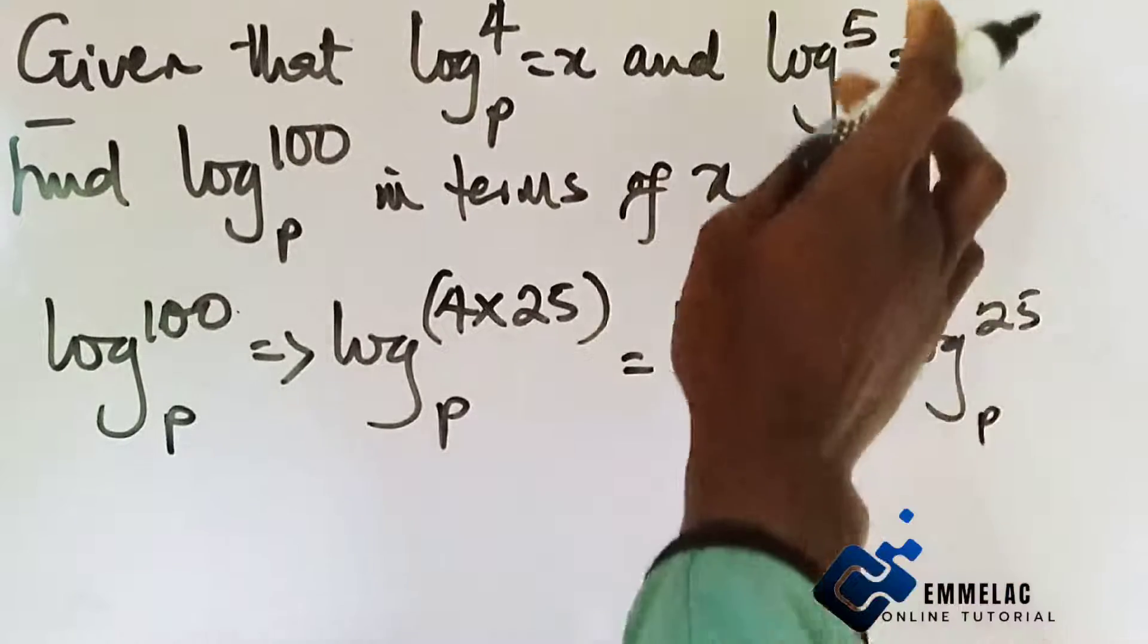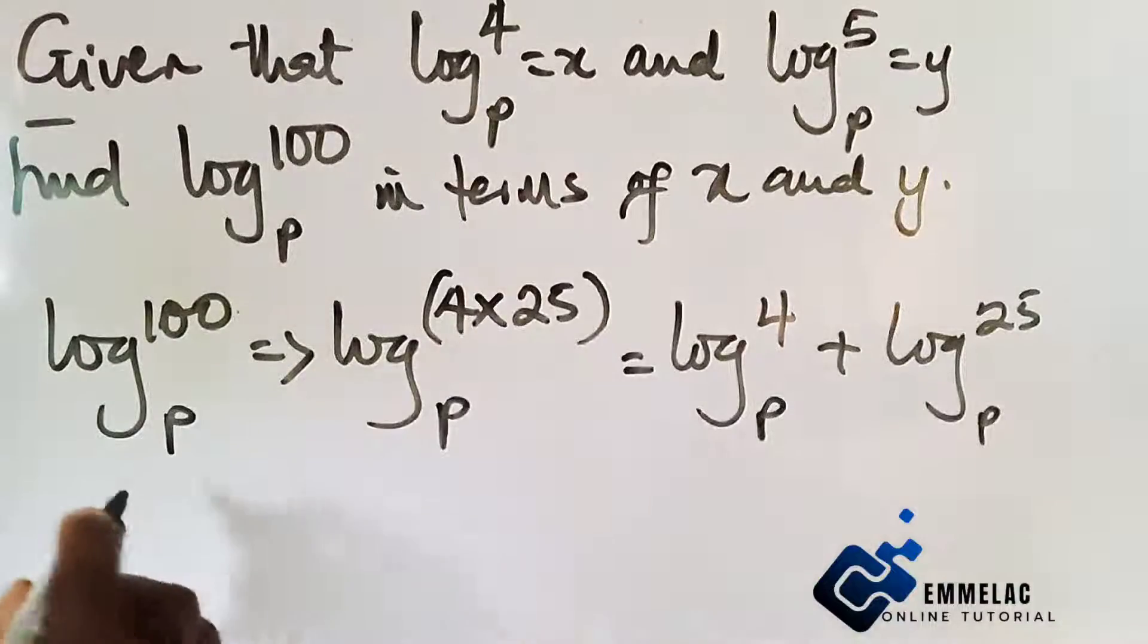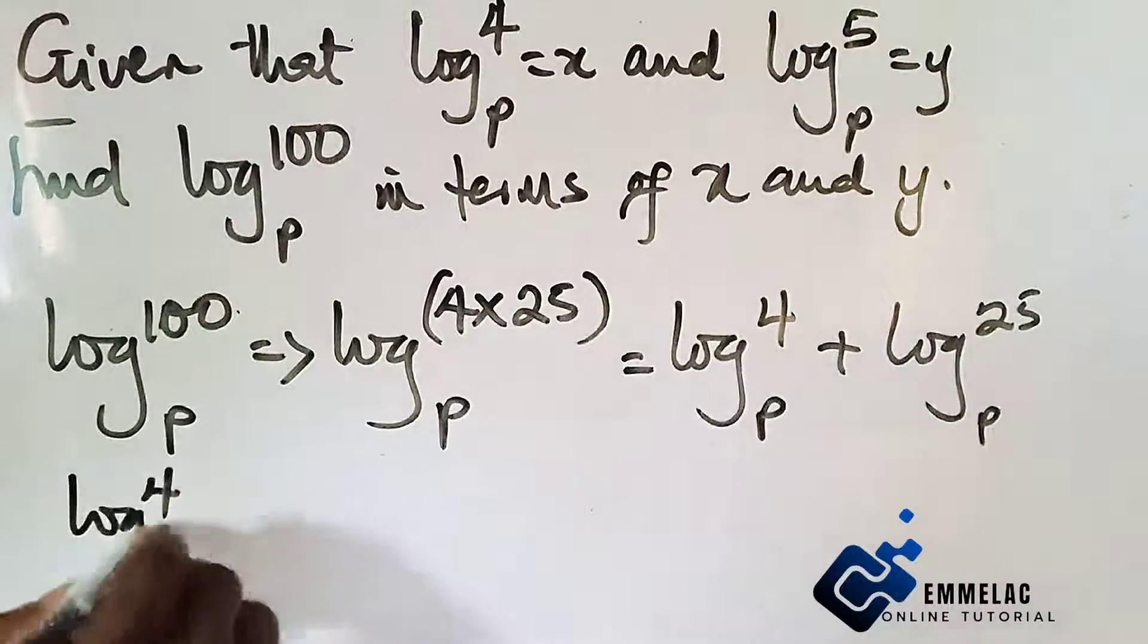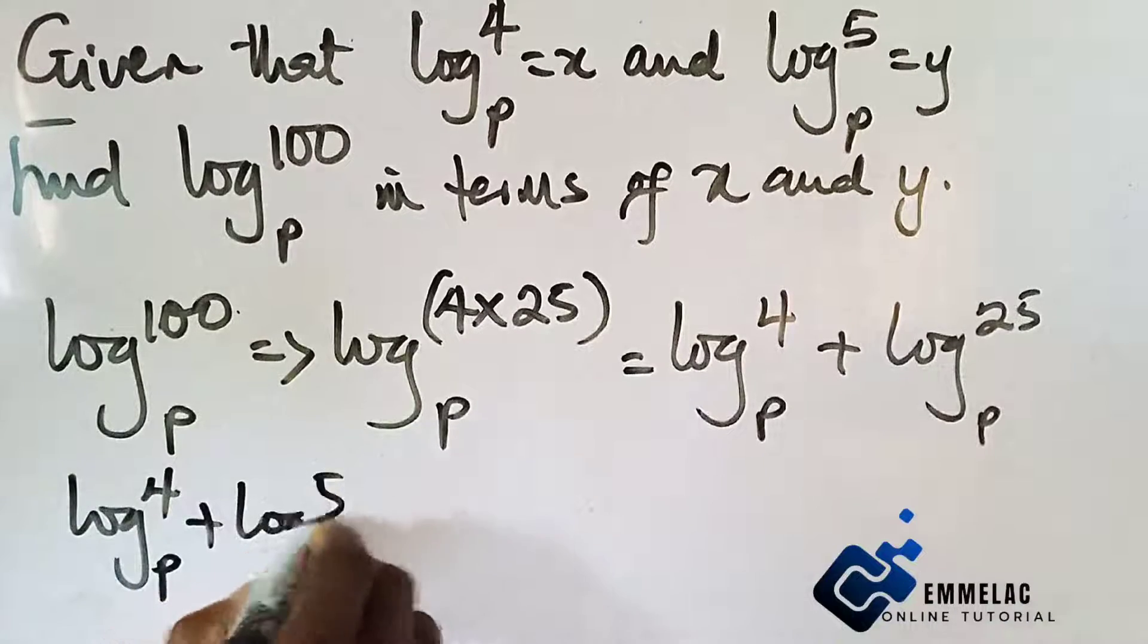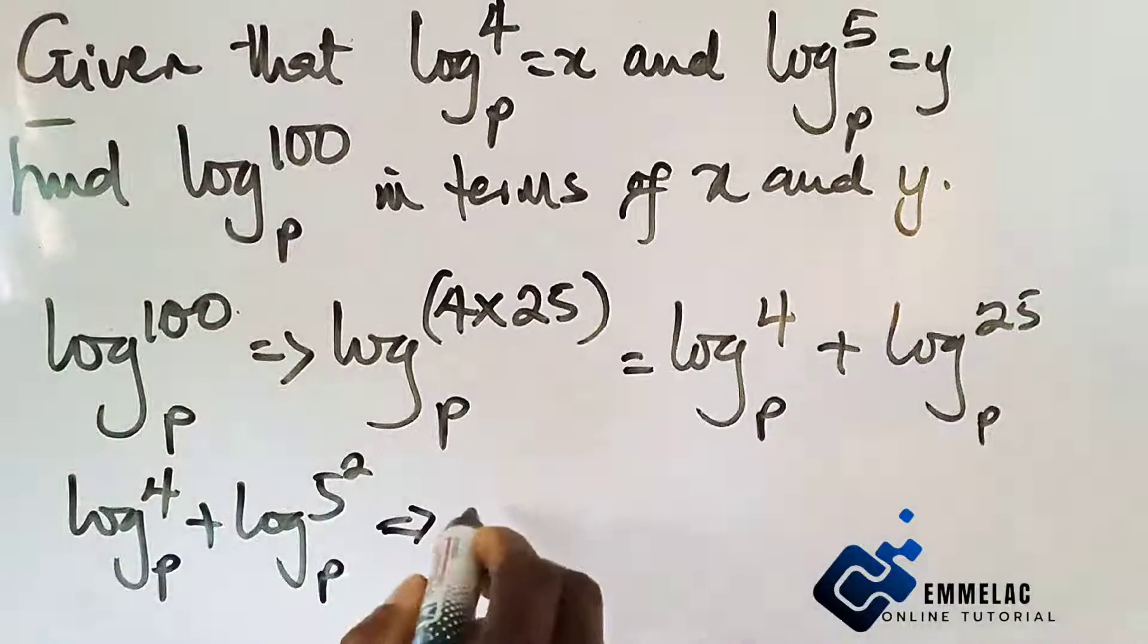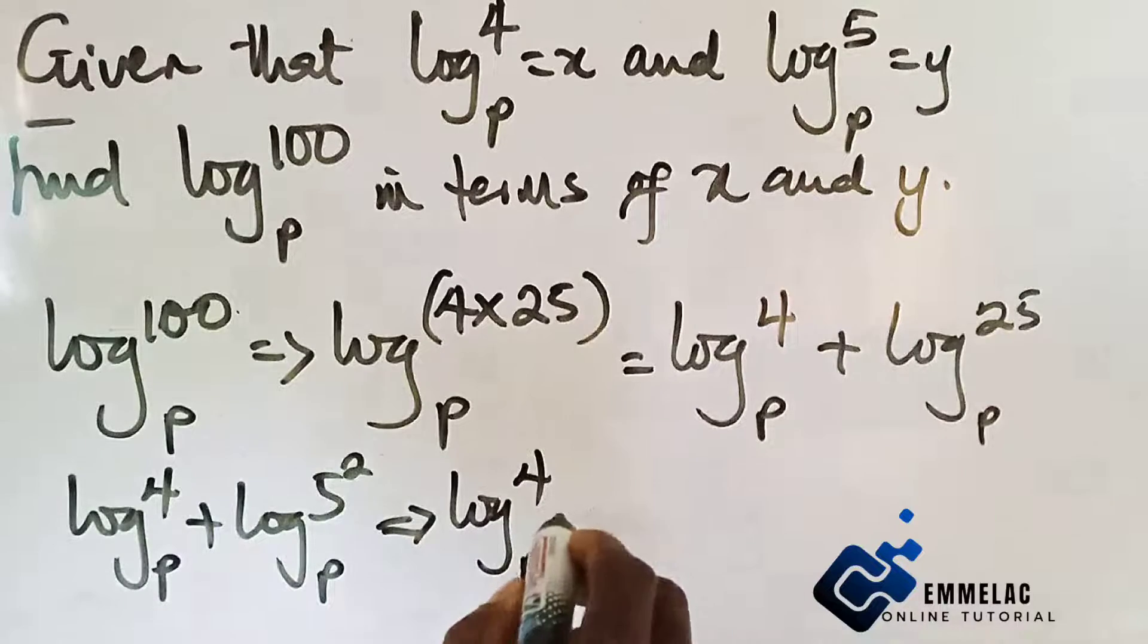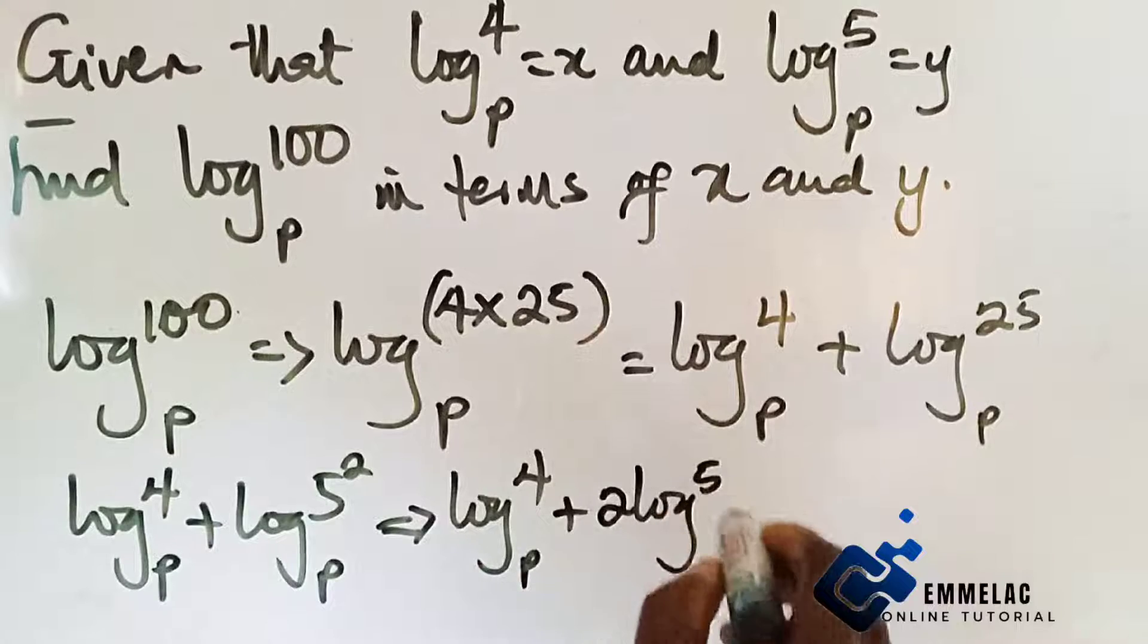Now we can split this further to ensure we have log 5. So here we have log base p of 4 plus log base p of 5 raised to power 2, which will also give us log base p of 4 plus 2 log base p of 5.